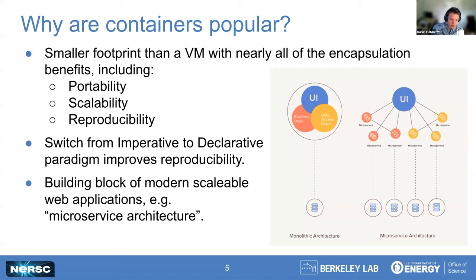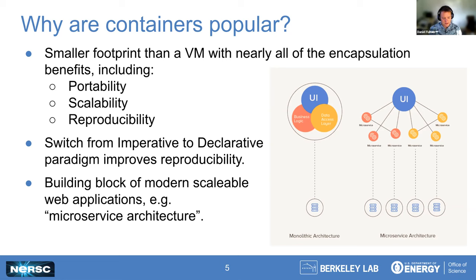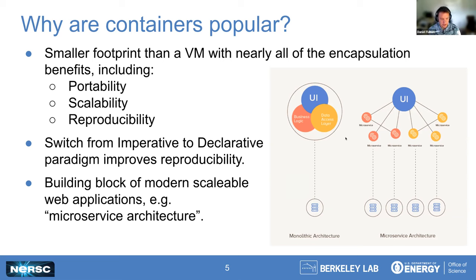An imperative paradigm is giving a list of instructions, whereas a declarative paradigm is saying 'this is the result I want at the end.' When you deploy via Kubernetes and other container technologies, they work that way — the system has a chance to say 'we didn't reach the declared goal, so I can try to correct for that.' If you give a list of instructions and something goes wrong in the middle, you don't necessarily know what went wrong or how to fix it. All of this together becomes the building blocks of a modern scalable web architecture.